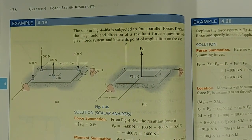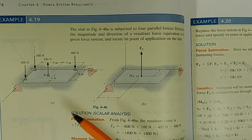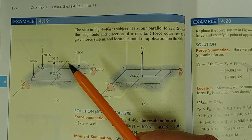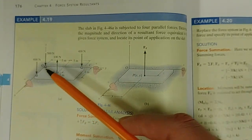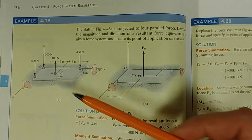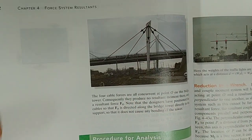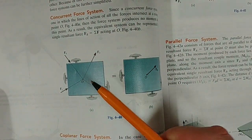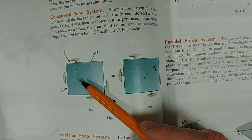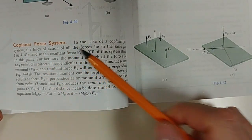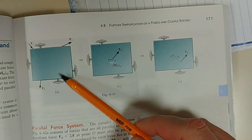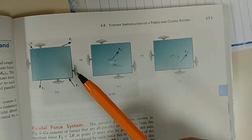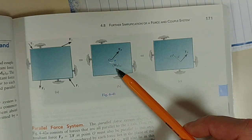Remember, the only time that we can replace a system with an equivalent force is when the direction of the resultant force and the direction of the resultant moment is perpendicular. That only happens when you've got a concurrent force system where all the forces are acting through the same point, or if you've got a coplanar force system where all your forces are acting in the same plane, which means all the moments of those forces will be perpendicular to the plane.